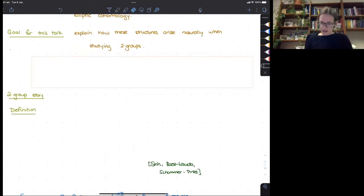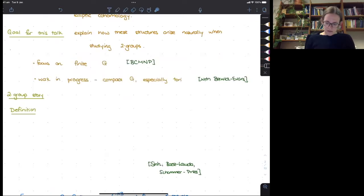So the goal for this talk is to explain how these structures of this line bundle and the vector space arise naturally when you study 2-groups. We're going to focus on the case of the finite group G, and work in progress is for compact G and especially the case of tori to begin with, joint with Dan Berwick-Evans.